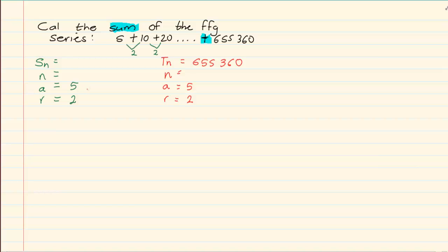So we're no longer going to start with the SN. We're going to first work with the TN. Once we substitute, we do the correct formula. I'm substituting: A is 5, R is 2 to the power of N minus 1, equals 655,360.